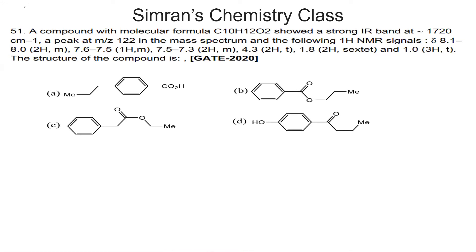Hi everyone, welcome to acceptance chemistry class. Today we will discuss GATE chemistry previous year questions. The first question is a compound with a molecular formula C10H12O2. It showed a strong IR band at 1720 cm⁻¹, a peak at m/z 122 in the mass spectrum, and 1H NMR signals given — including a 2-hydrogen multiplet signal. We have the structure of the compound and will approach this question.